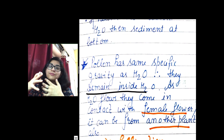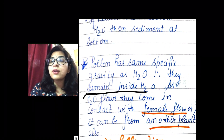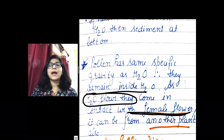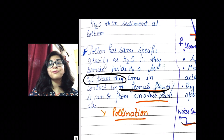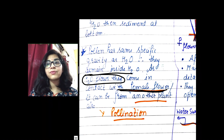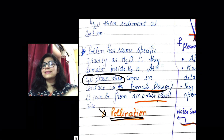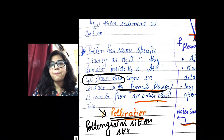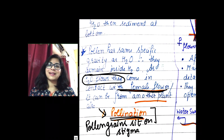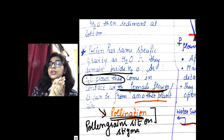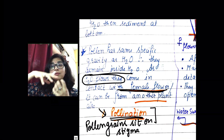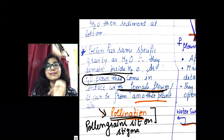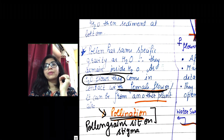The male and female flowers of Zostera are both growing in water. As water flows, the pollen grains come in contact with female flowers. The moment pollen grains sit on the stigma, pollination happens, followed by fertilization. This method of pollination in submerged plants is known as hypo hydrophily.